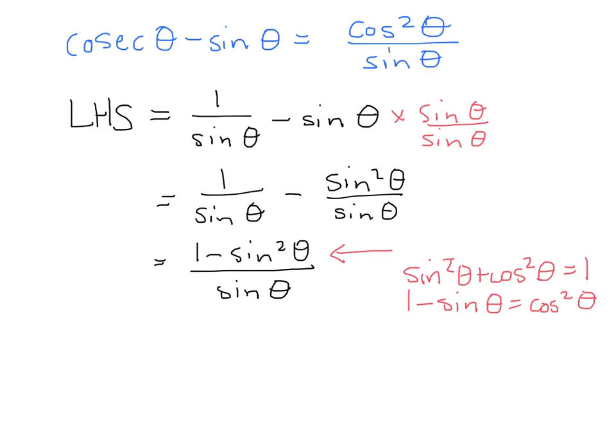So using that Pythagorean identity, we get left-hand side is equal to cos squared theta over sine theta, which is just our right-hand side. So our identity is proved.